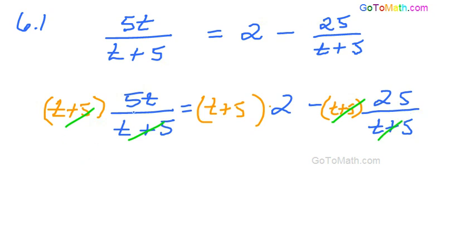Alright, so that will get rid of our fractions. So we have 5t is equal to, and I'm going to go ahead and distribute this 2 across. So we have 2t plus 10. Alright, and then of course those are going to disappear. And we're going to be left with minus 25 here.